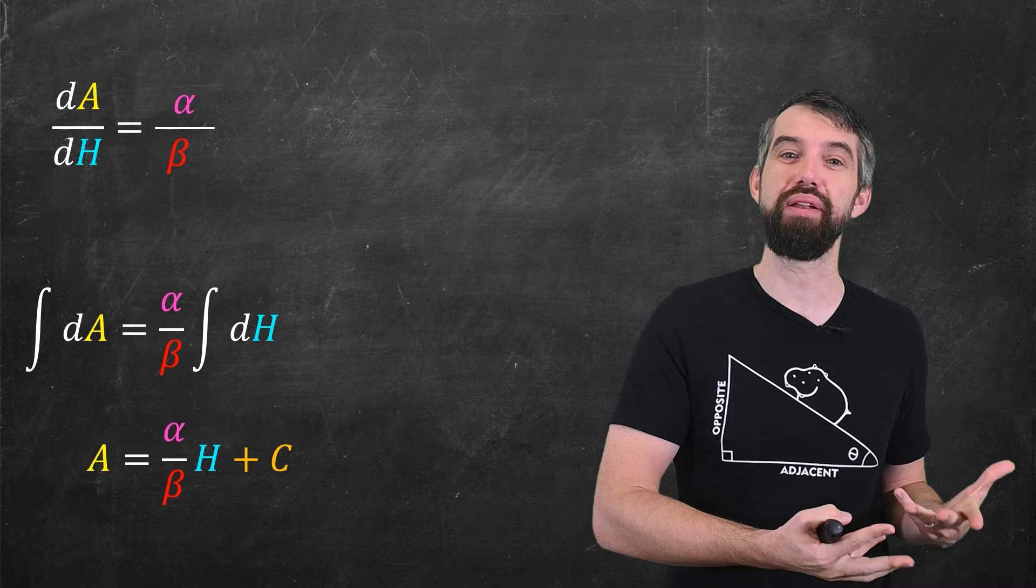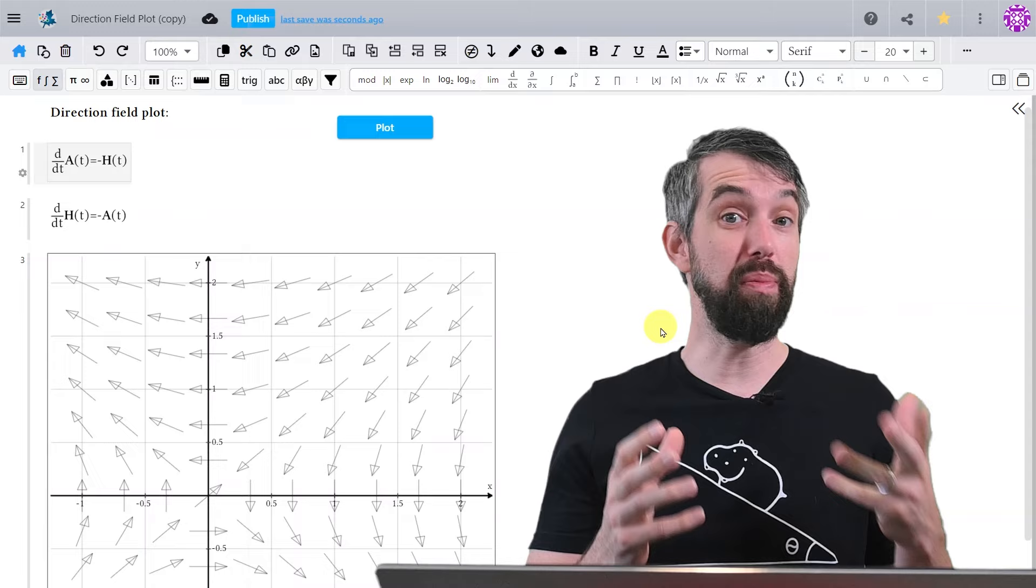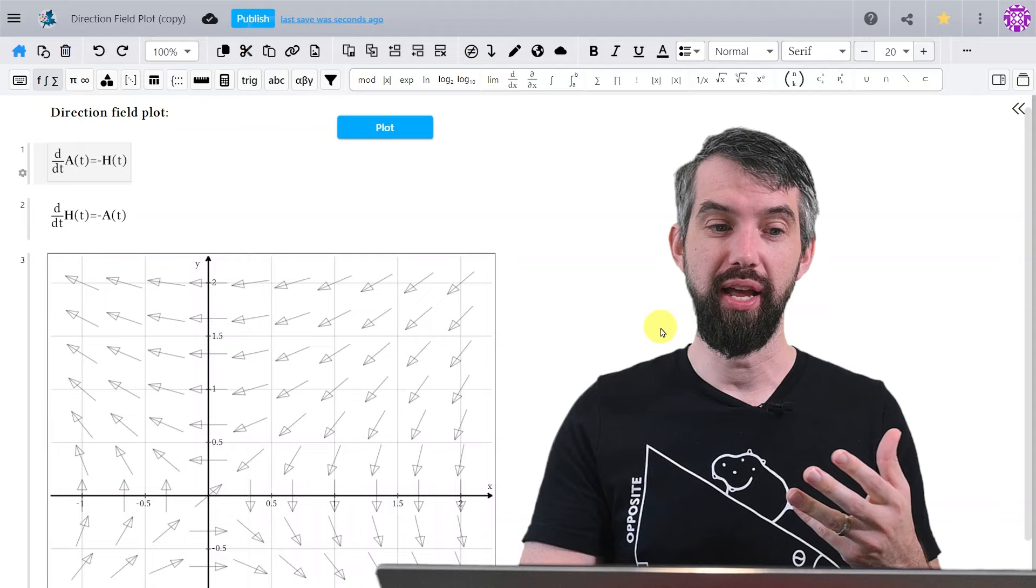So depending on your exact context, which exact of these models you want to use is going to depend. I can also use MapleLearn to show a different type of visualization. This is referred to as a direction field.